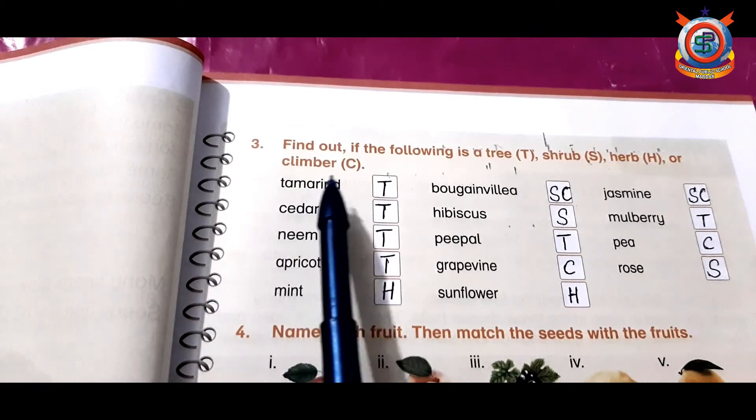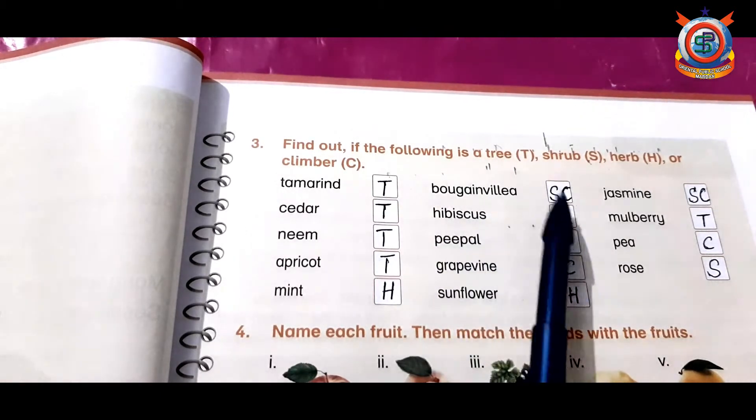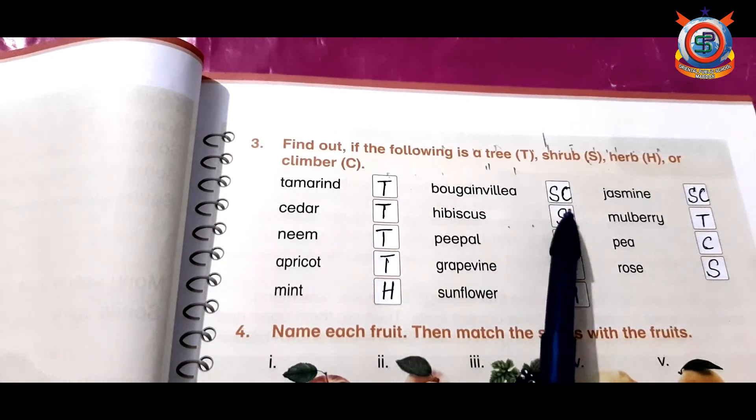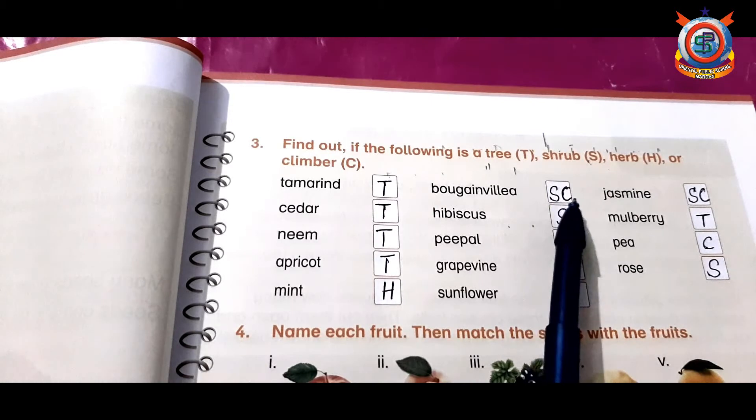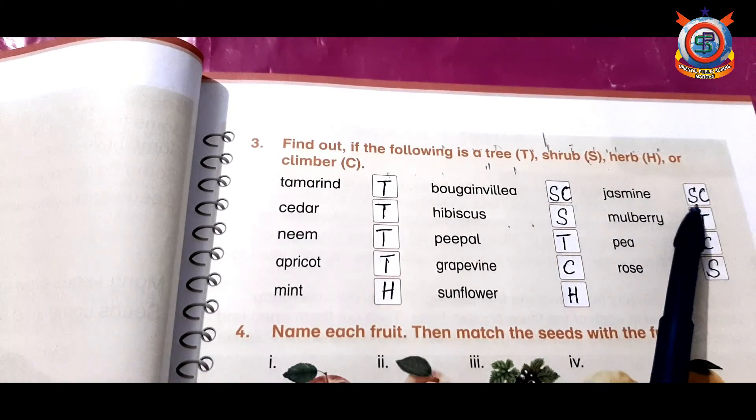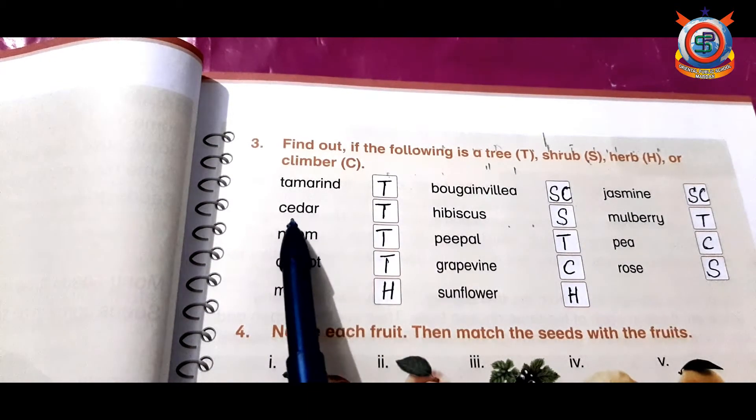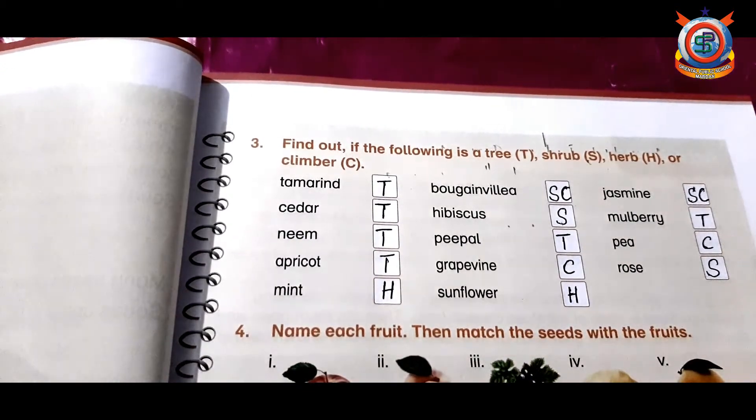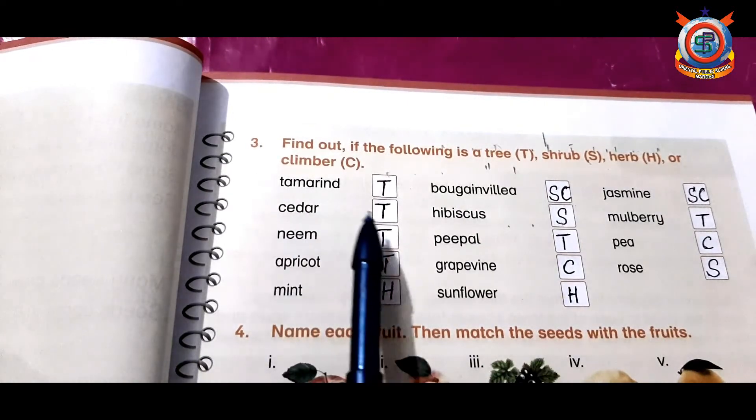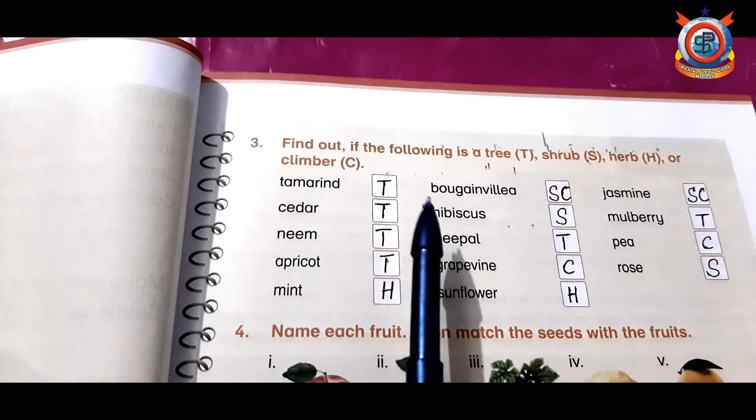Bougainvillea: it is a shrub and also a climber. Jasmine: it is a shrub and also a climber. Cedar: it is a tree. Cedar is devdar kadrakht.